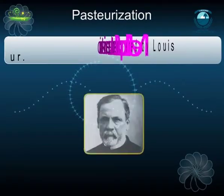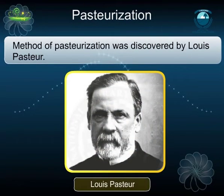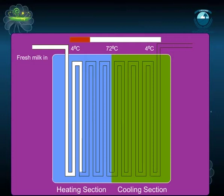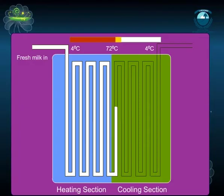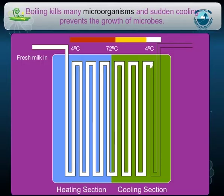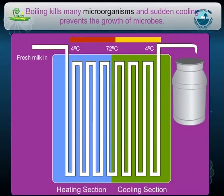The method of pasteurization was discovered by Louis Pasteur. This method was developed for preserving milk. Milk is heated to about 60 to 70 degrees centigrade for 15 to 30 seconds and then suddenly chilled and stored. Boiling kills many microorganisms, and sudden cooling prevents the growth of microbes.